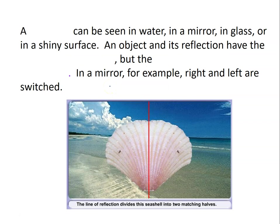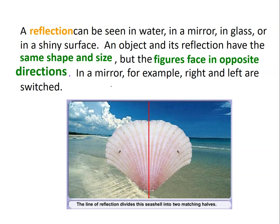A block can be seen in water or in a mirror. When you're looking at a mirror, what will happen? So this is a reflection — in a glass or shiny surface. An object and its reflection have the same shape and size, but the figures face in opposite directions in a mirror. For example, right and left are switched. When you face the mirror, it's different. The line of reflection divides this seashell into two matching halves.